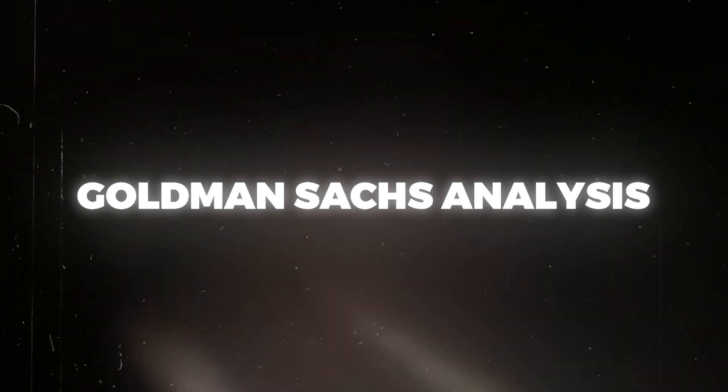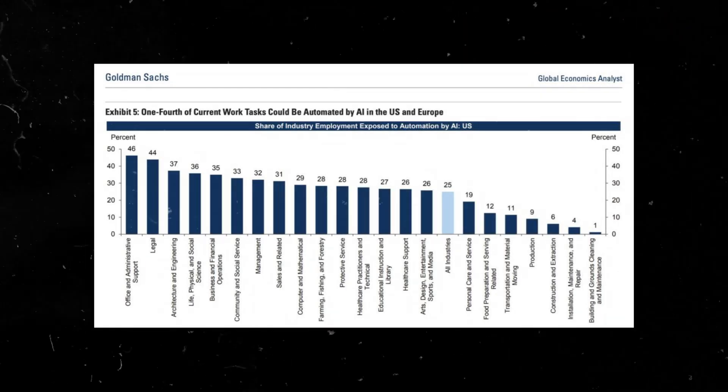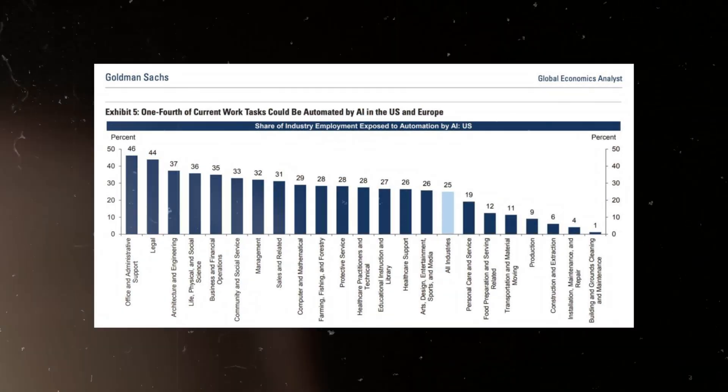According to a recent Goldman Sachs analysis, 300 million jobs could be automated due to AI. Although Kaku concedes that it might take another century or two, he believes that sentient machines may eventually emerge from labs. He believes there are plenty of reasons to be happy in the interim.